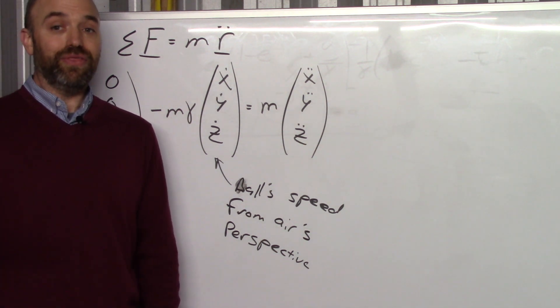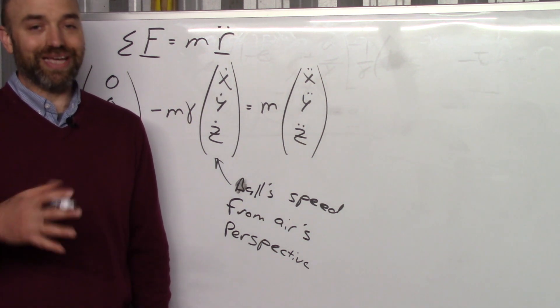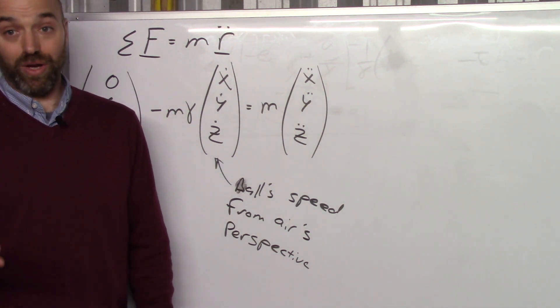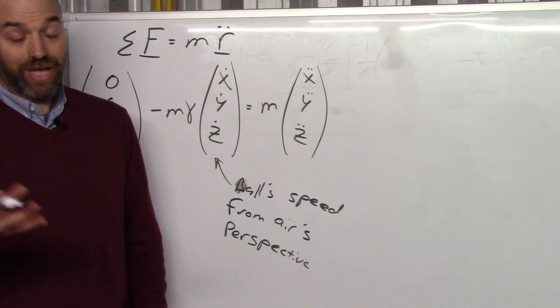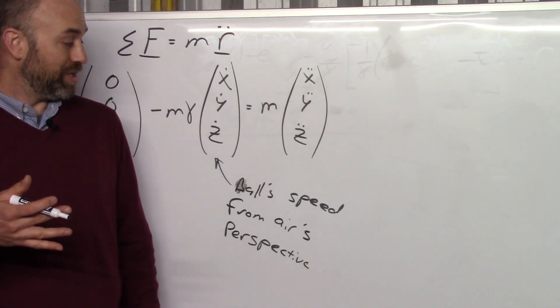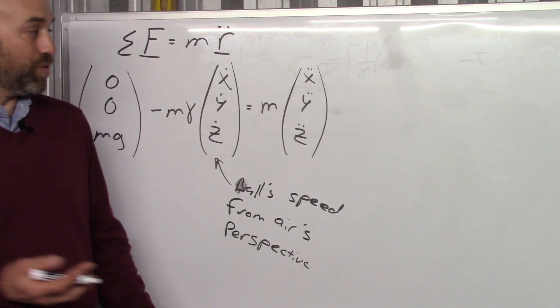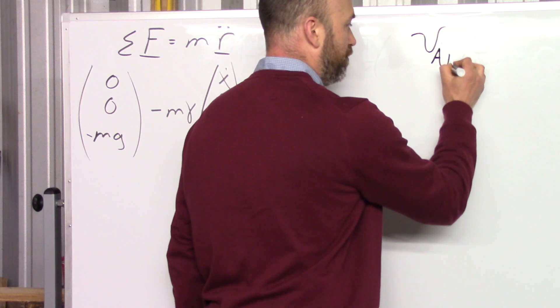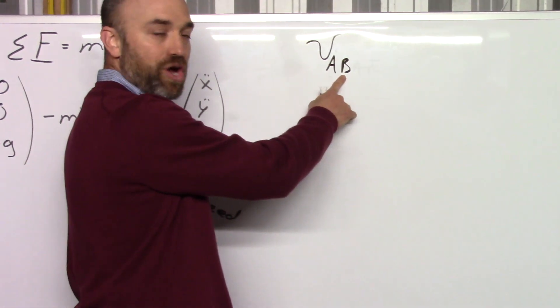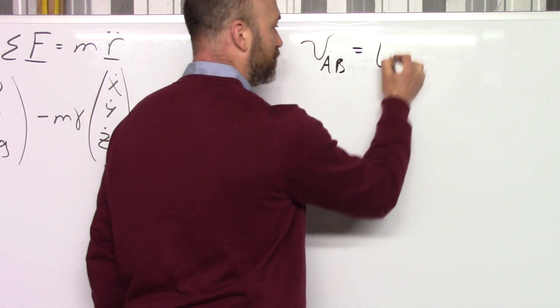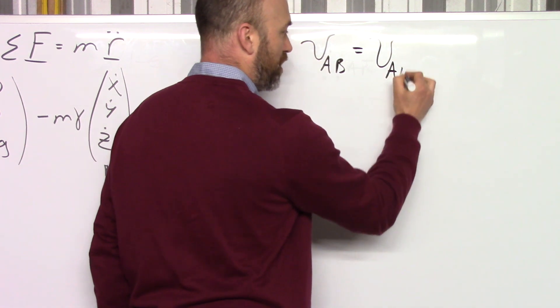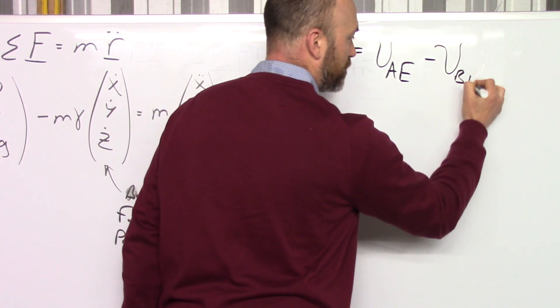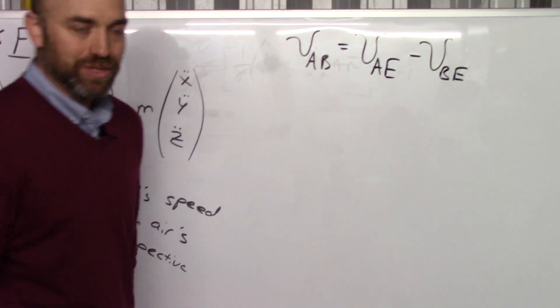Now if you're in the advanced dynamics for engineers, I just put together a video about relative speed. So if you want to watch that, you can click over to that page on my website and you can see that video. But I'll just put the equation up for now. The speed of one object from another object's perspective is equal to the speed of the first object from the earth's perspective minus the speed of the second object from the earth's perspective.